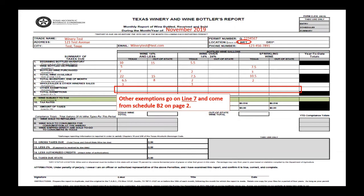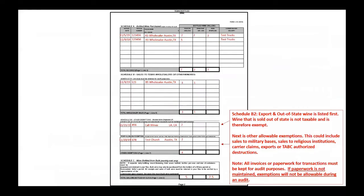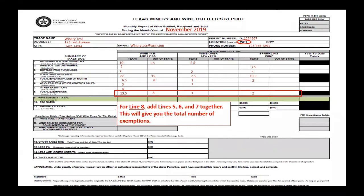Other exemptions go on line seven and come from Schedule B2 on page two. Schedule B2 lists exports and out-of-state wine first — wine sold out of state is not taxable and therefore exempt. Next are allowable exemptions, which could include sales to military bases, sales to religious institutions, carrier claims, exports, or TABC-authorized destructions. All invoices or paperwork for transactions must be kept for audit purposes. If paperwork is not maintained, exemptions will not be allowed during an audit.